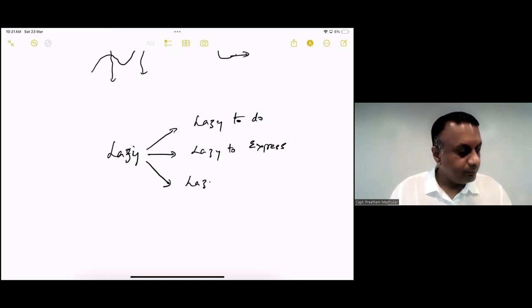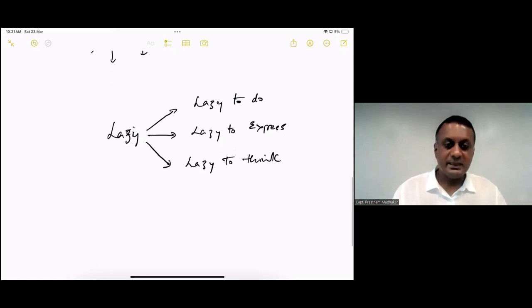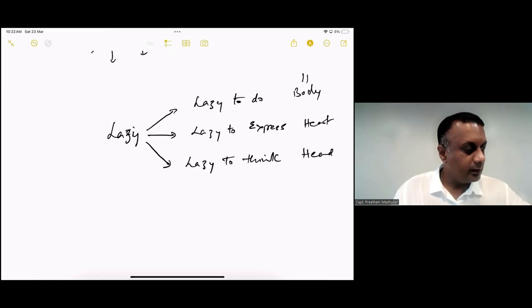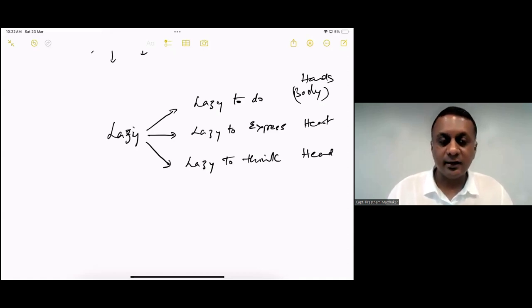And then you have lazy to think. Okay? Lazy to think. Organize this, plan this, make a business plan, make a professional growth plan. We are lazy to think. Right? So, when we overcome this laziness in all these three forms, right? This is in the body. This is in the heart. And this is in the head. Okay? Head, heart, and hands. You can also call it hands. So, when we overcome this head, heart, and hands, and become masters of this head, heart, and hands, then the will also become stronger.